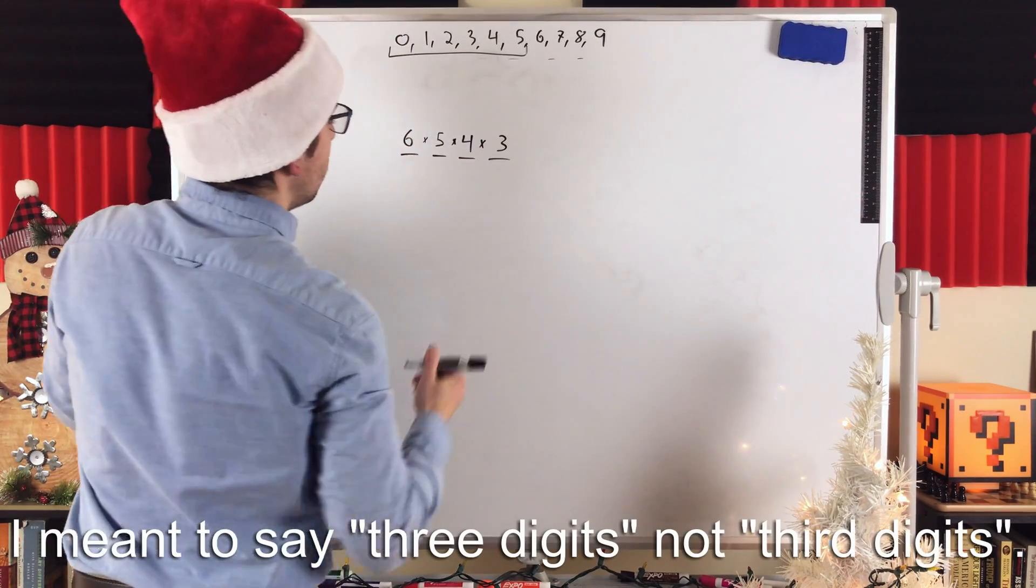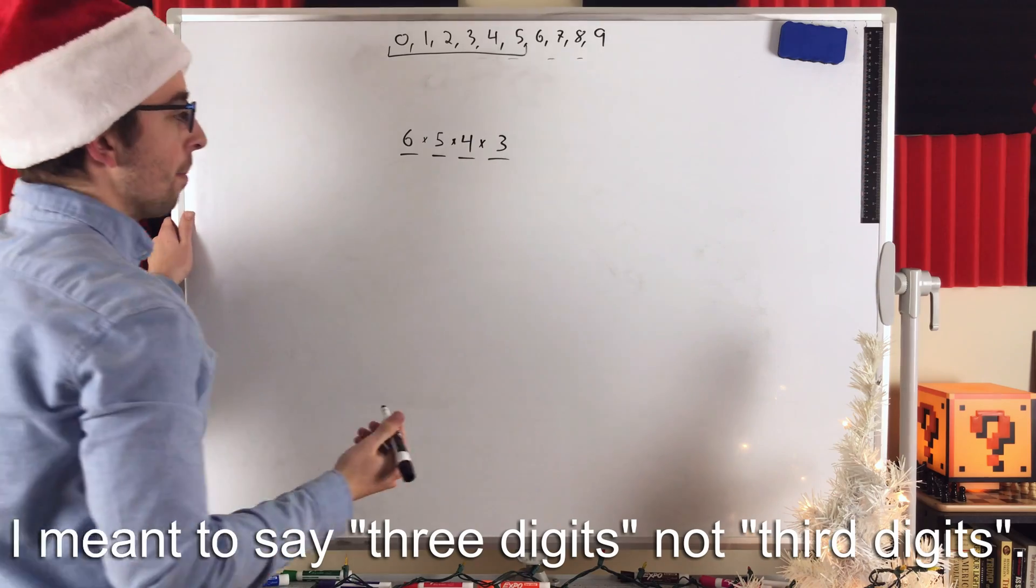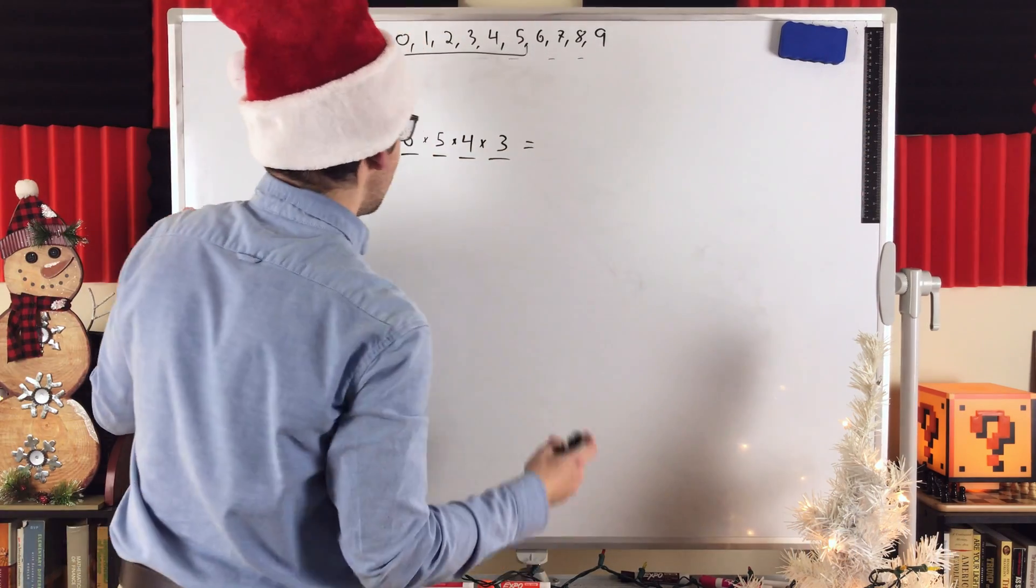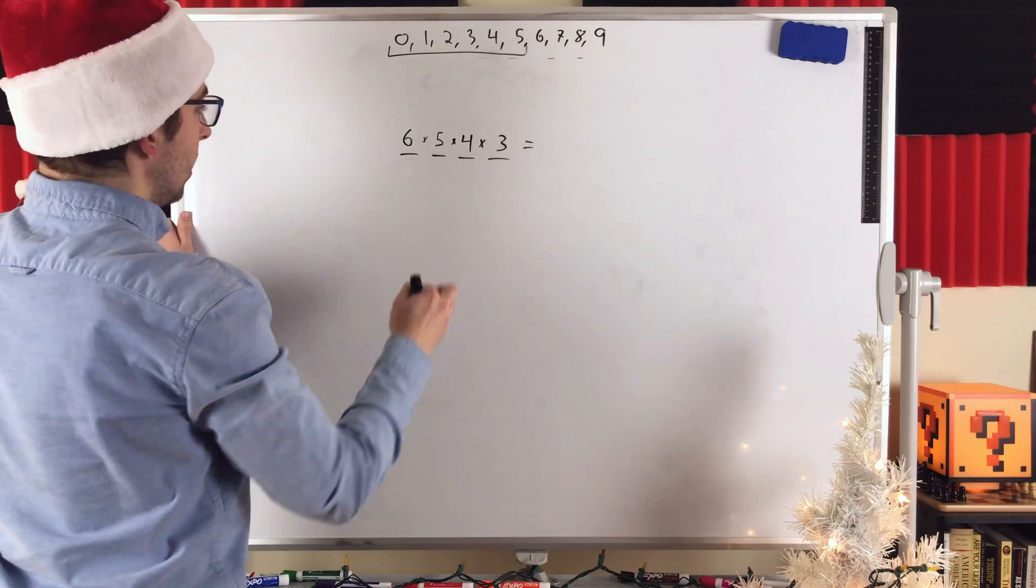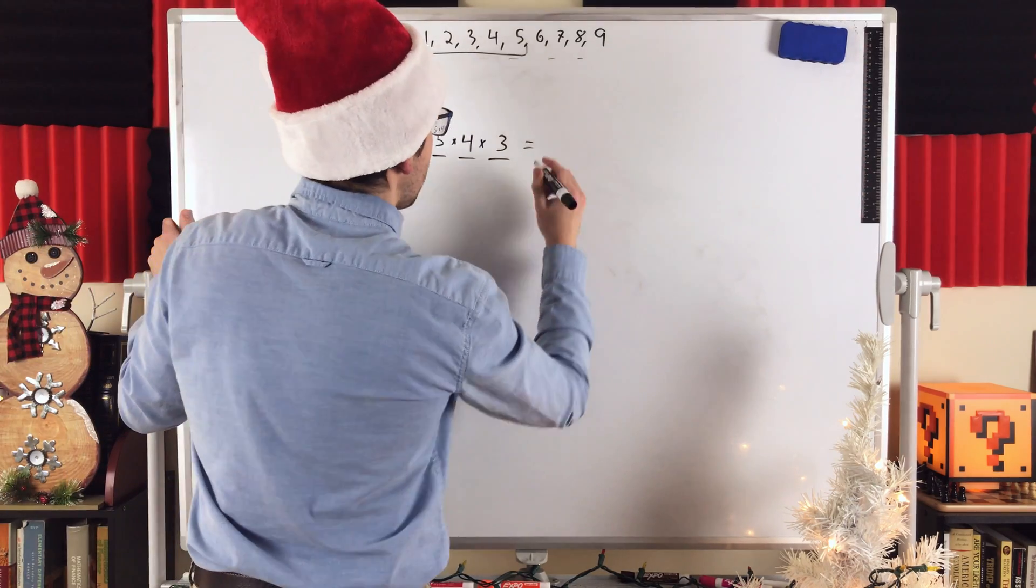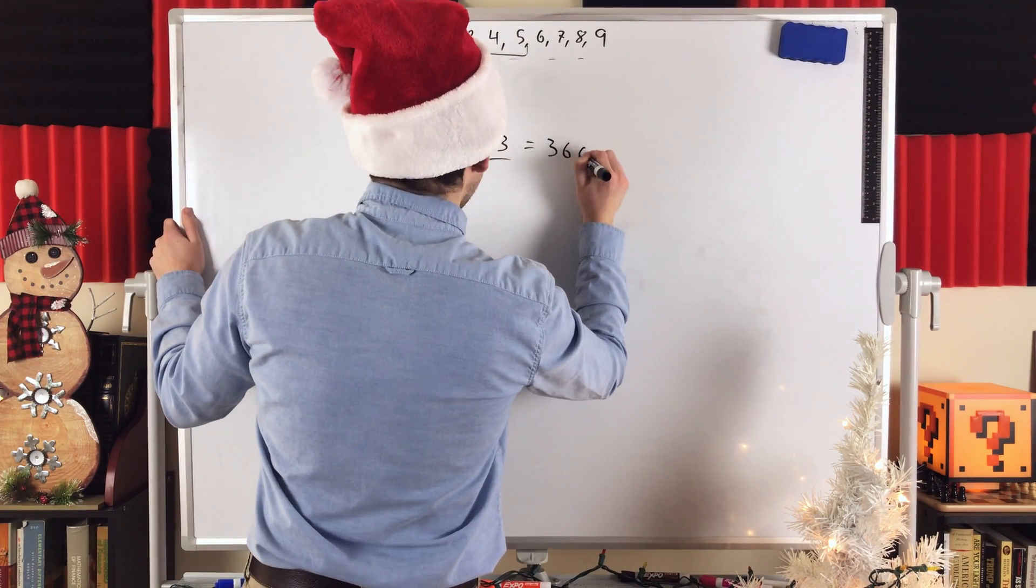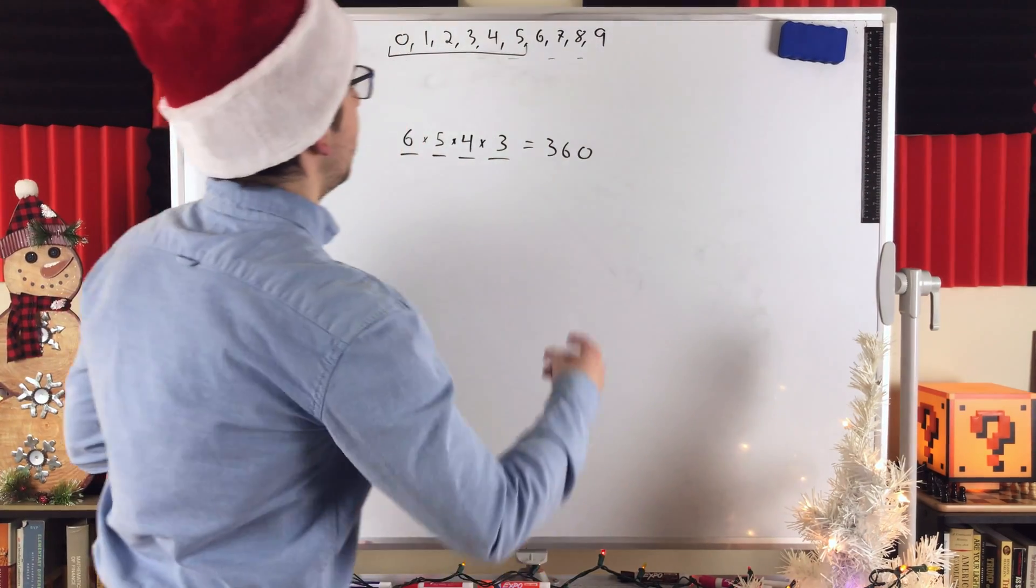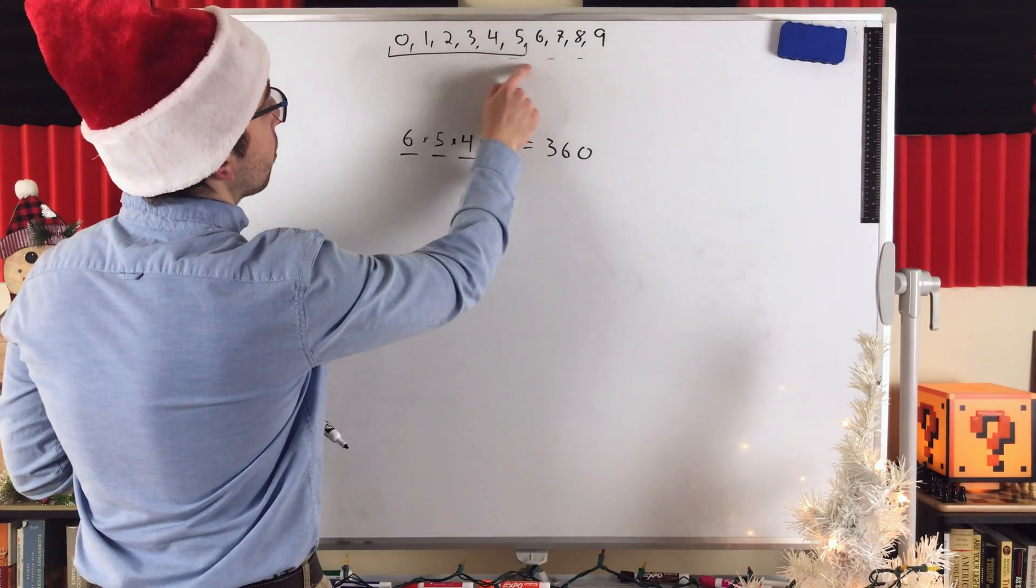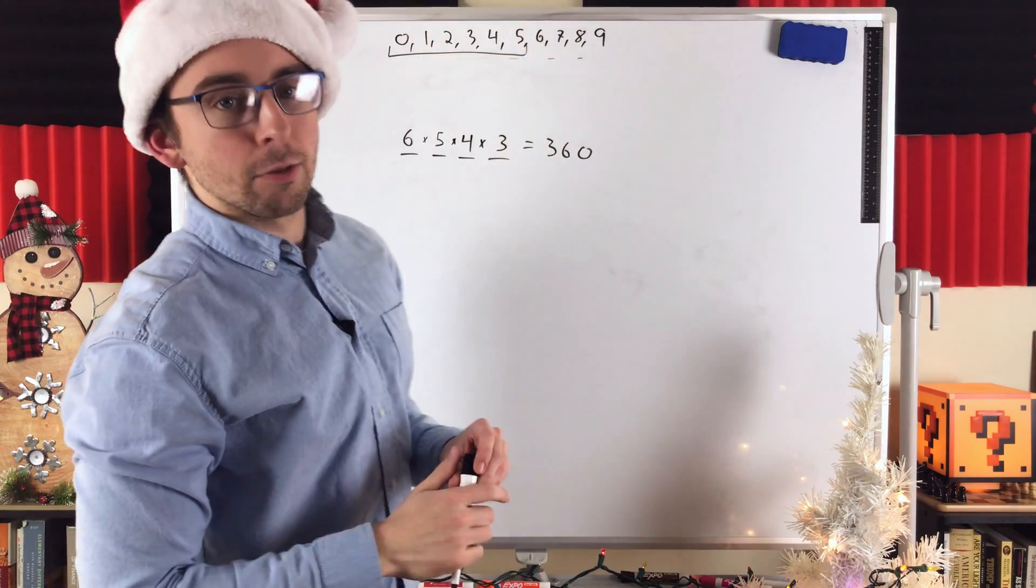And then, there's only 3 digits to choose from for the last number in the code. This comes out to be 6 times 5 is 30, 30 times 4 is 120, 120 times 3 is 360. That's the number of 4-digit codes that can be created using the numbers 0 through 5, and not allowing repetition.